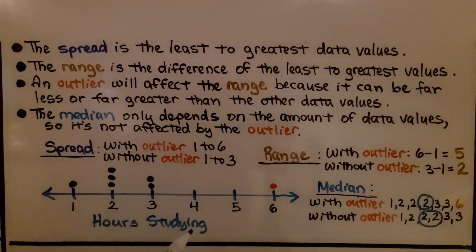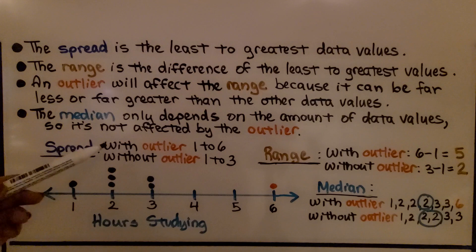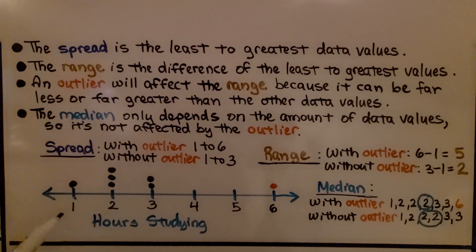So here we have hours studying. We can see there's one for one. We have three dots on two, two dots on three, and we have an outlier of six. We can compare the spread with the outlier and without the outlier.